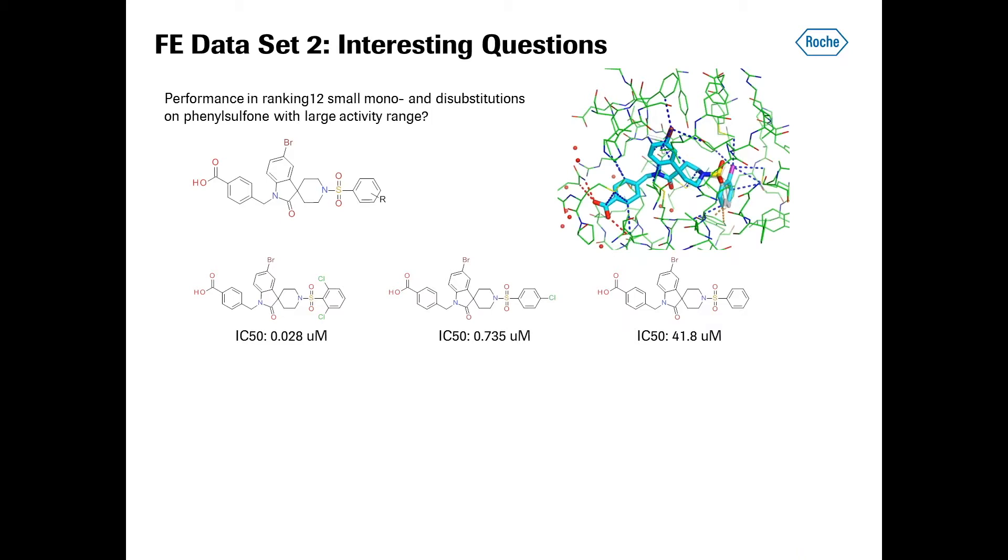Now, there were two specific free energy datasets. One for the spirocycles, for which the binding mode is shown here, which has a lot of hydrophobic interaction, as shown here by the blue dashed lines. And then, on the left part, some polar groups, also some solvent interactions with solvent accessible regions. There are some interesting questions in the dataset, where I'm curious to see how well the different competitors did. For example, in the dataset, there were 12 closely related analogs, where there were 12 small substitutions on the terminal sulfone phenyl ring, with however, a large affinity range.